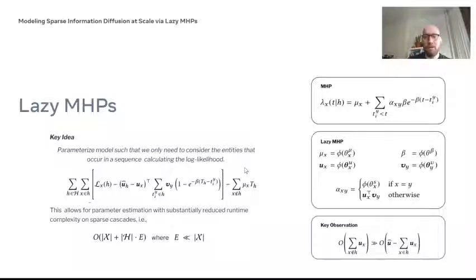Overall, what we get is a combined model and inference procedure where we now have a runtime complexity that is of the order of X plus H, not X times H. In detail, X plus H times E, where E is the average number of entities that occur in the sequence. As I've shown, E is obviously much smaller than X, which can give us really big scalability gains on sparse cascades.